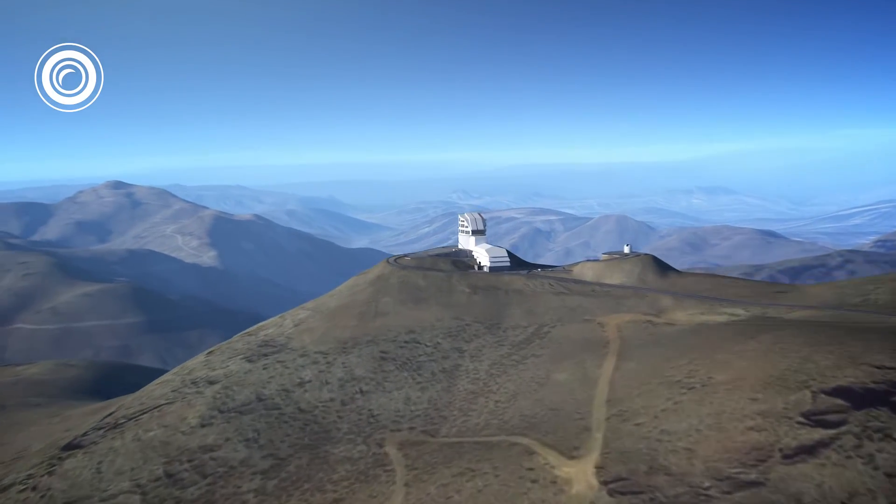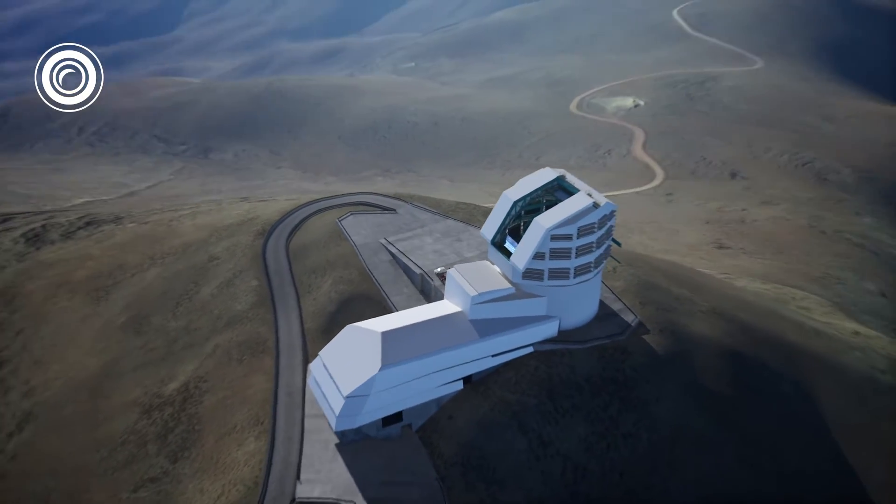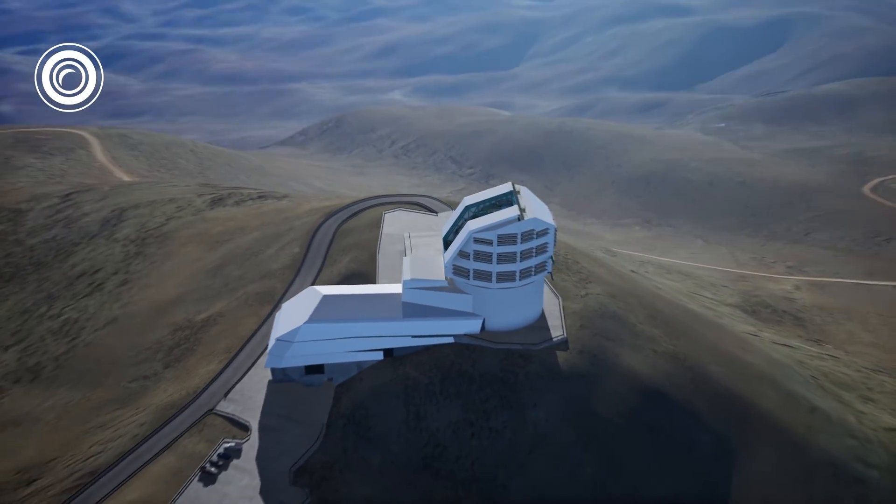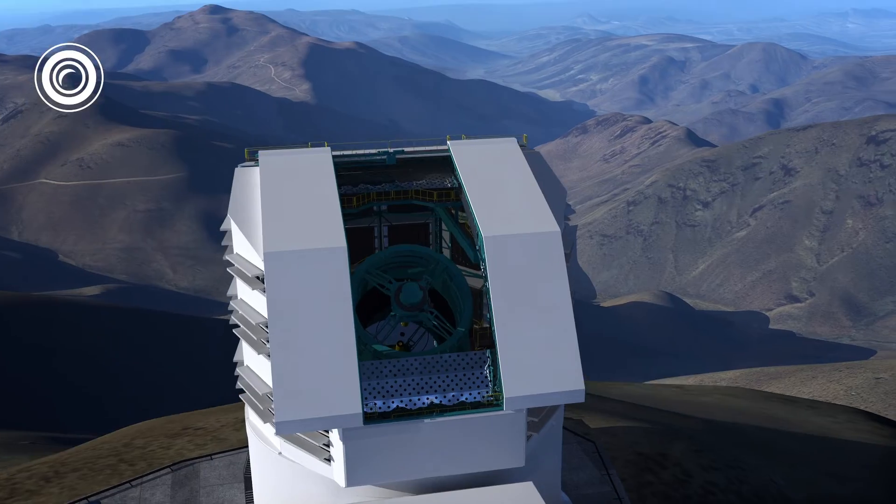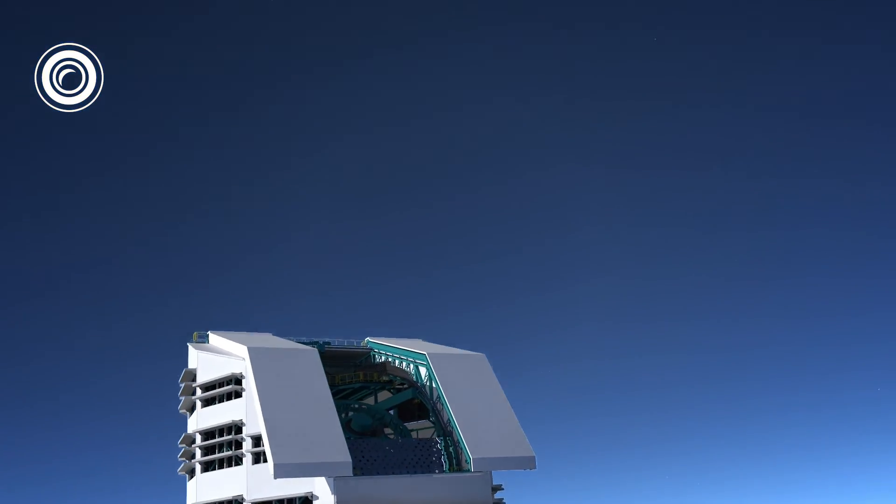Over its 10-year run, the LSST camera and the Vera Rubin Observatory are going to have a huge impact on the field of astronomy by cataloging roughly 20 billion galaxies. That's around 10% of all galaxies estimated to exist in our observable universe.